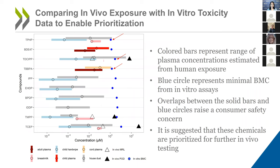We built chemical-specific PBK models using the HTTK package for all these flame retardants and were able to predict plasma concentrations from either human exposure, represented by the colored bar, or in vivo data, represented by the triangles. The blue circle represents the lowest benchmark concentration from all the in vitro assays in the testing battery. The red arrow indicates chemicals where an overlap is observed between the solid bars and the blue circles, suggesting that human exposure might exert a developmental neurotoxicity effect. These chemicals would be prioritized for further in vivo testing.